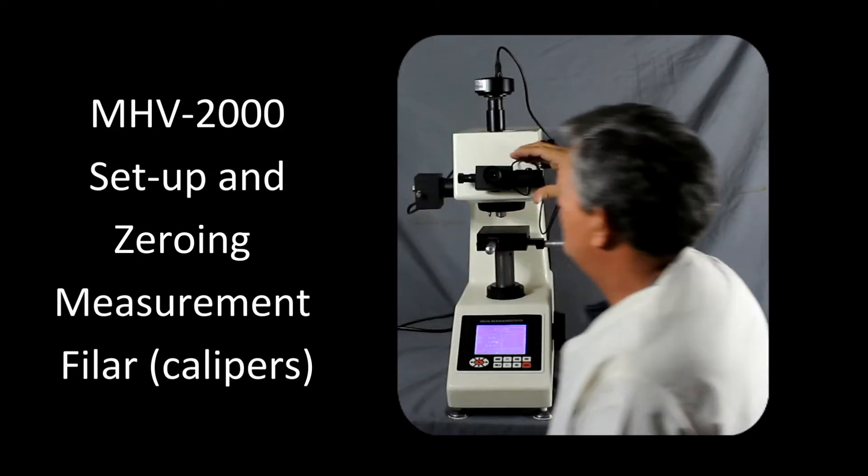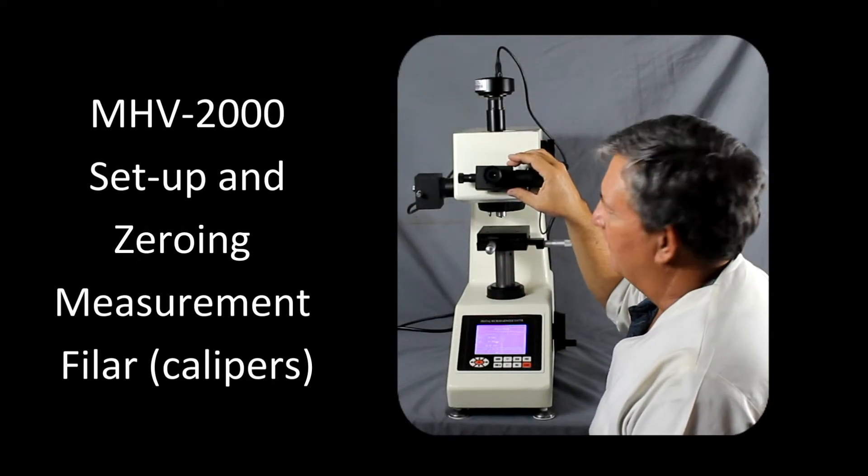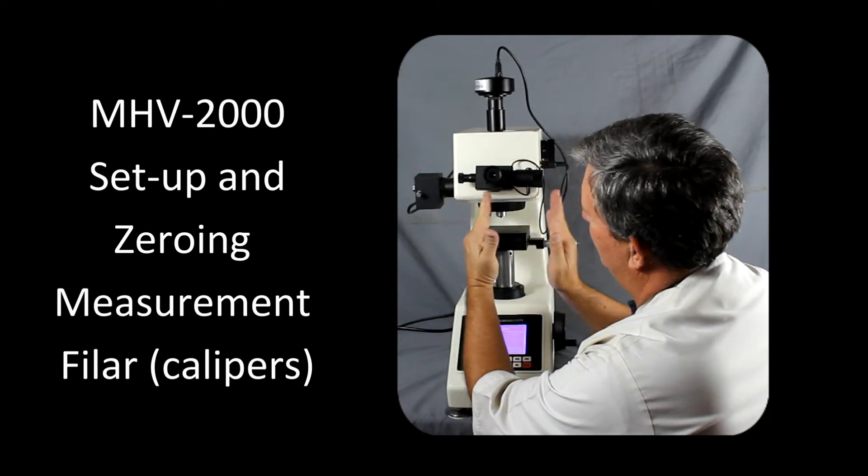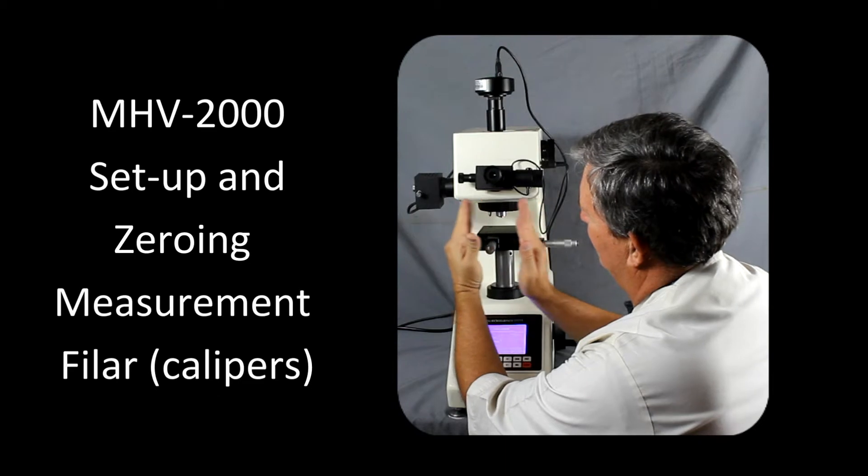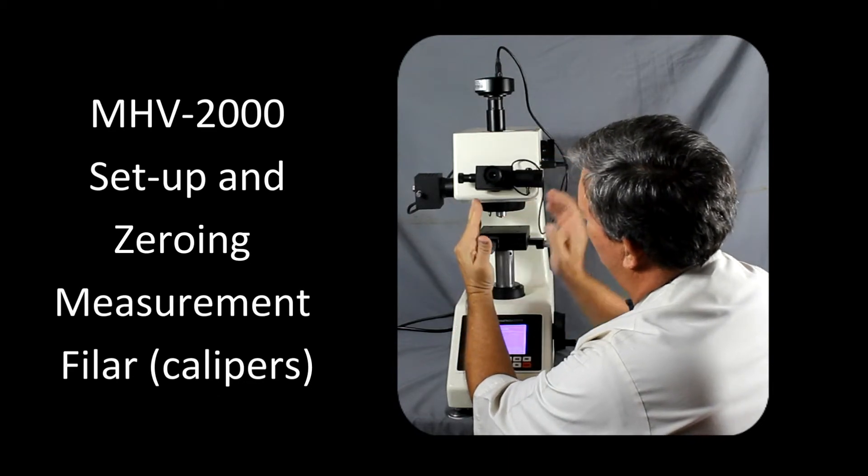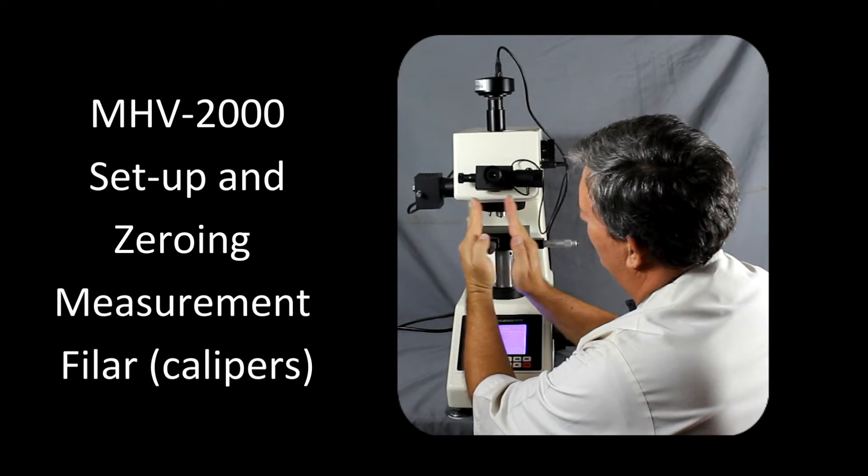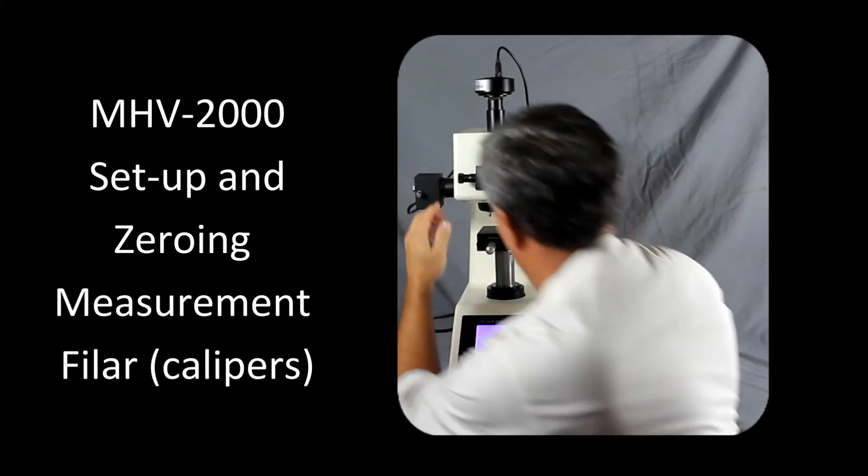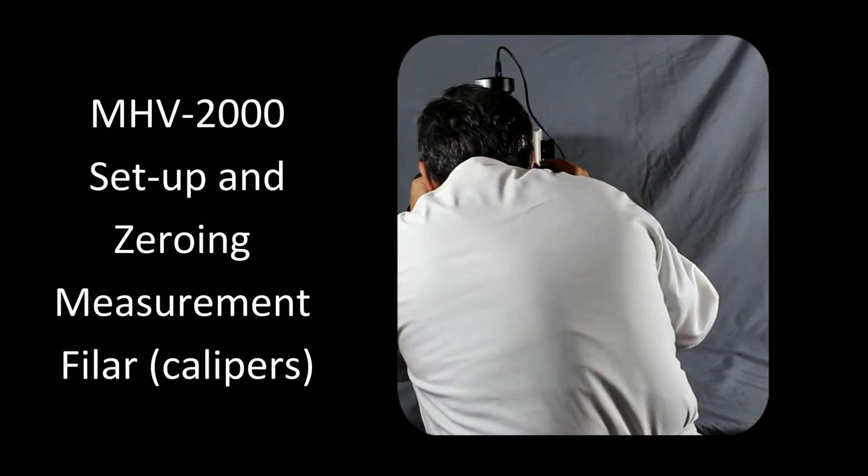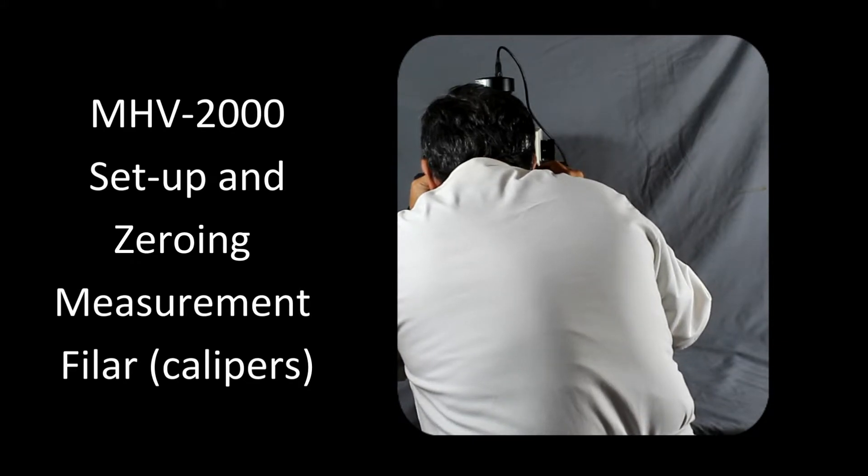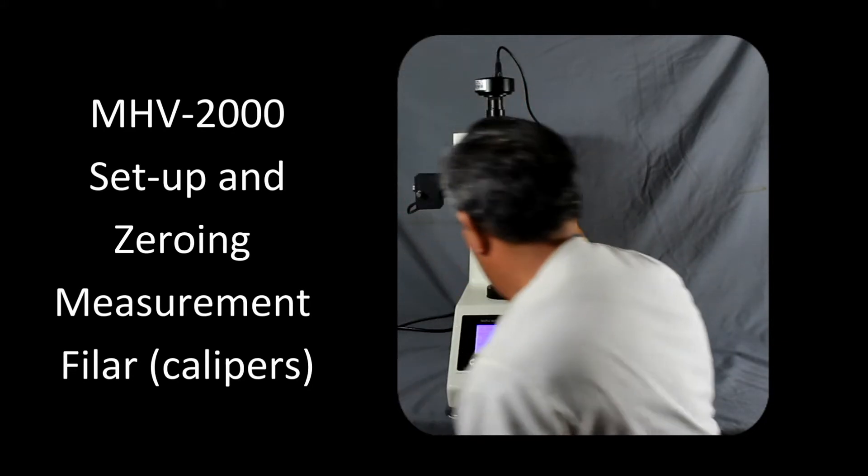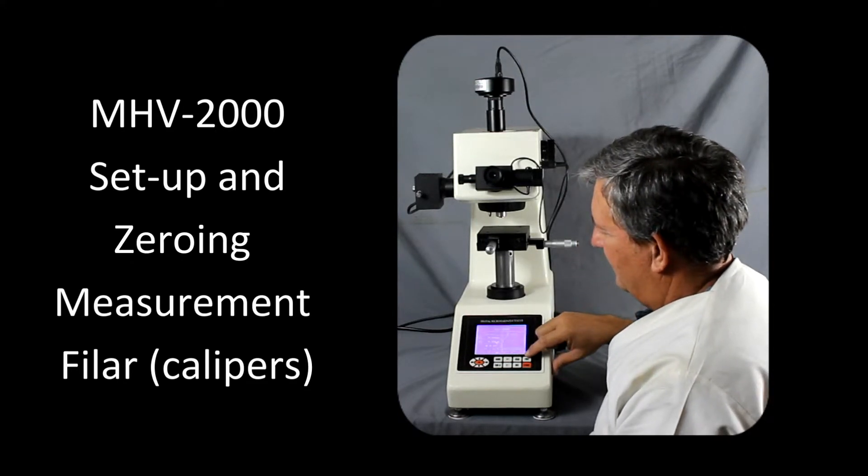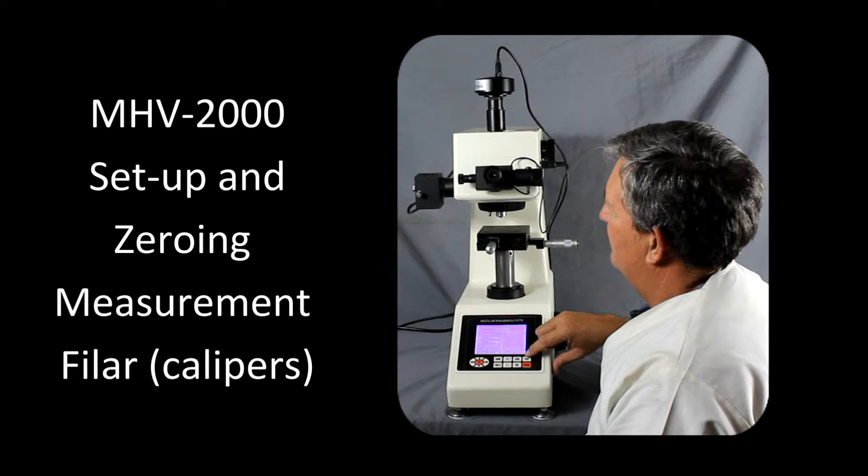Once you've accomplished that, now what we have to do is we have to set the filer to zero. The way the filer works is the small knob here will move the lines back and forth this way. The larger knob here will change the distance between them. So what we need to do is we need to bring the lines so they're just barely touching. And once we do that, we press the CLR button here. That will set our calipers to zero.